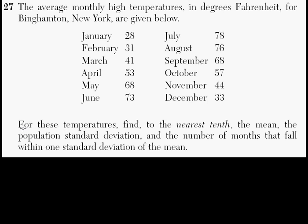For these temperatures, we want to find to the nearest tenth the mean, the population standard deviation, and the number of months that fall within one standard deviation of the mean. So there are three things we're looking for. We're looking for the mean itself, the standard deviation, and then the number of months that fall within one standard deviation of the mean.